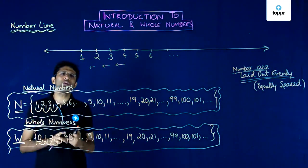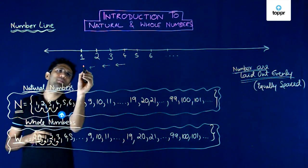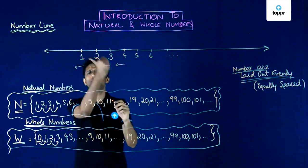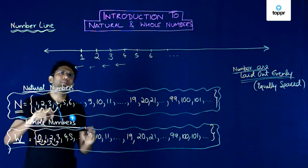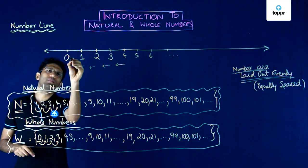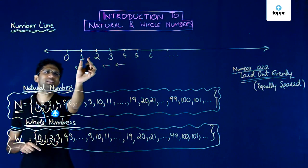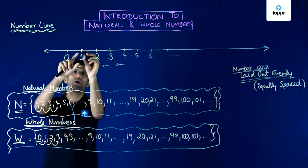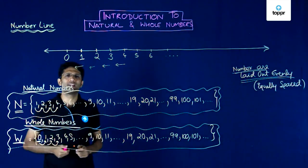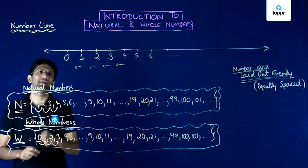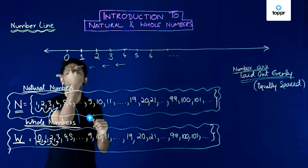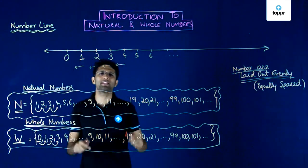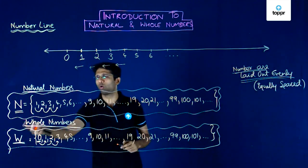From 1, if you take one step to the left, you get 0, because we are moving one step to the left of 1. When representing natural numbers on a number line, the line started from point 1. But now we are representing whole numbers as well, so we need to represent 0. Because 0 is less than 1, it comes to the left of 1. This is how we represent all whole numbers on a number line.